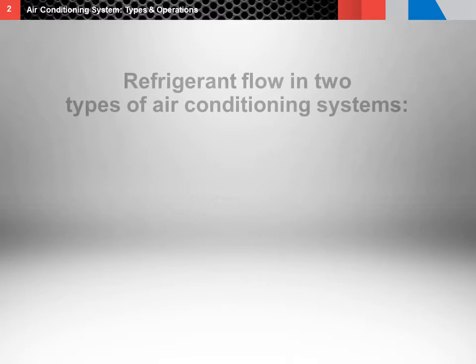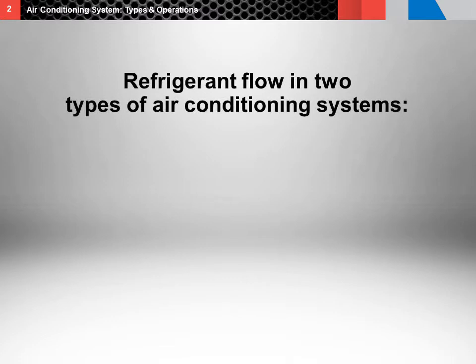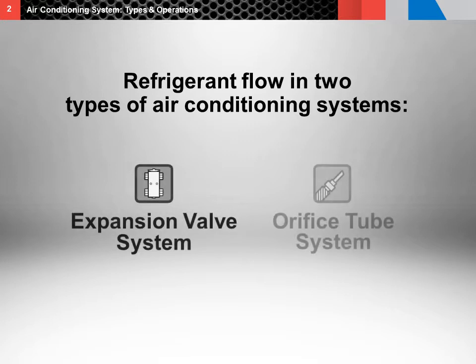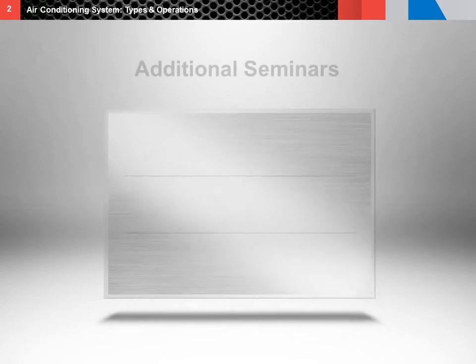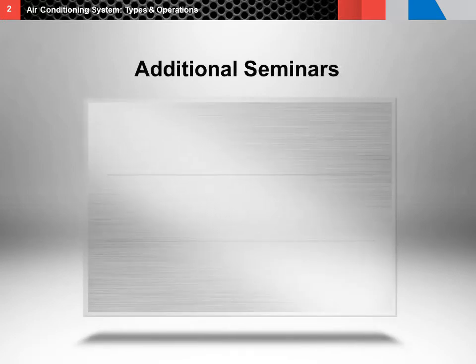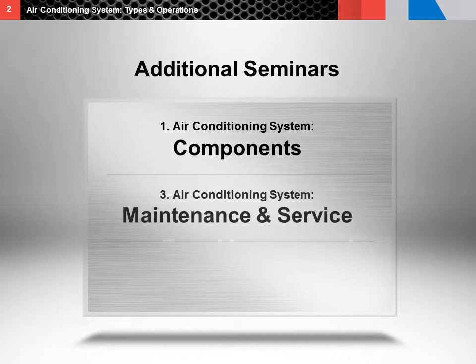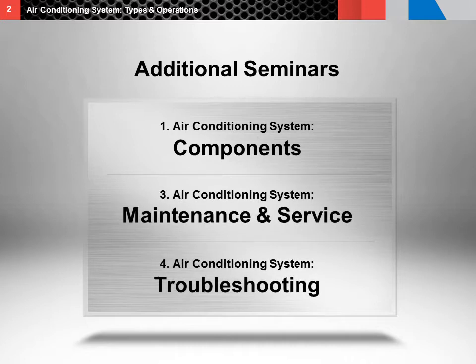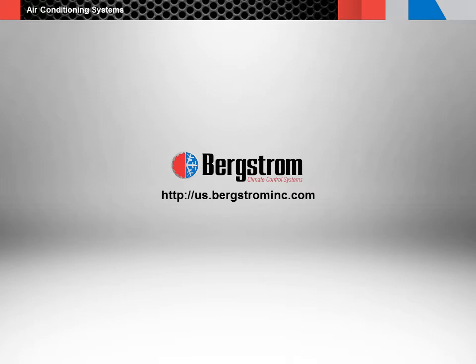You've now seen how the refrigerant flow in the two types of air conditioning systems — expansion valve system and orifice tube systems — operate. To learn more about both systems, be sure to watch our additional seminars: Air Conditioning System Components, Air Conditioning System Maintenance and Service, and Air Conditioning System Troubleshooting. They're very helpful in keeping your air conditioning systems running great. Thank you for your time. At Bergstrom, we're here for you.